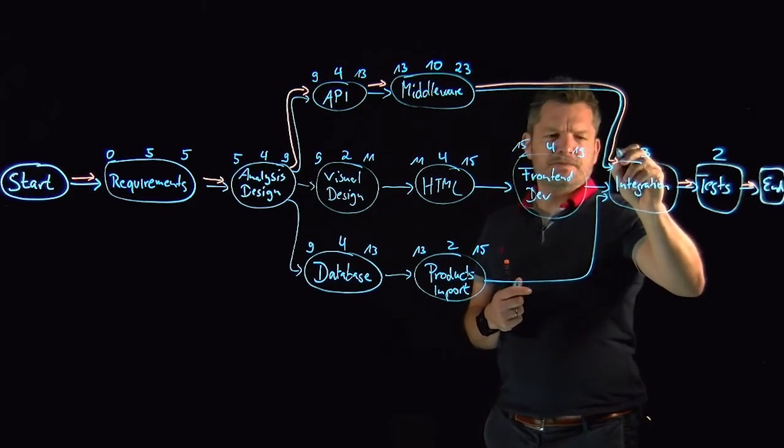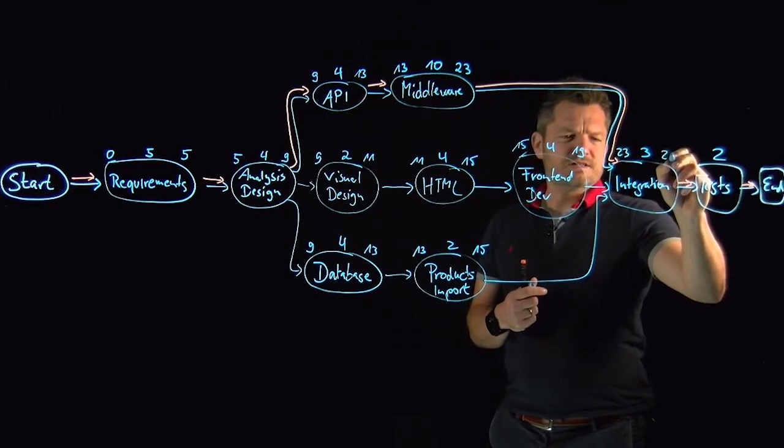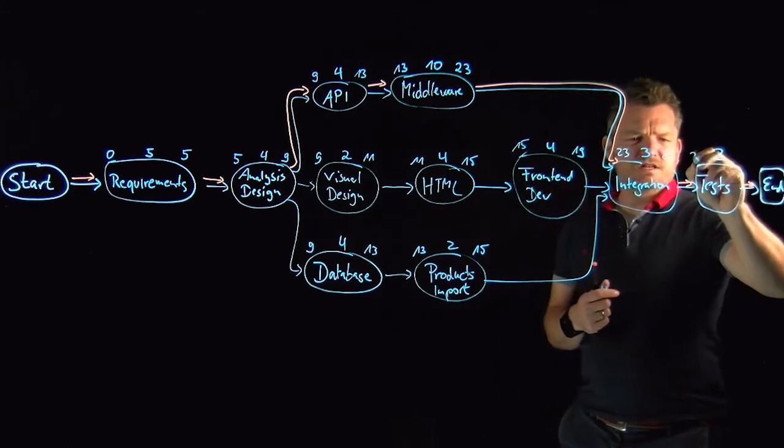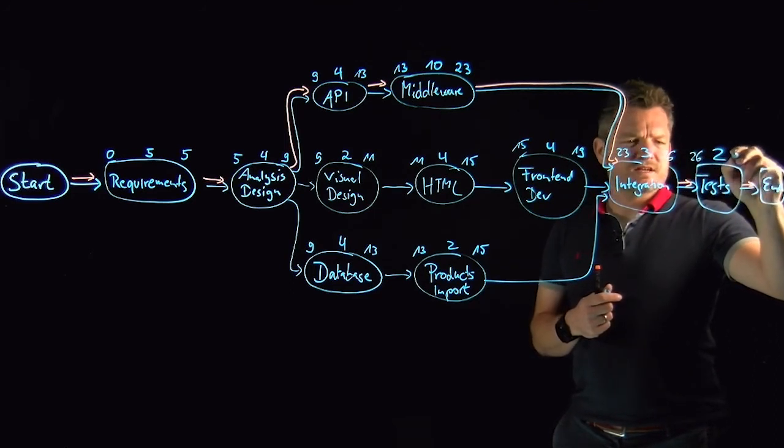So twenty-three plus three, twenty-six. Then we start with the tests in the end, the acceptance tests, and we have twenty-eight.